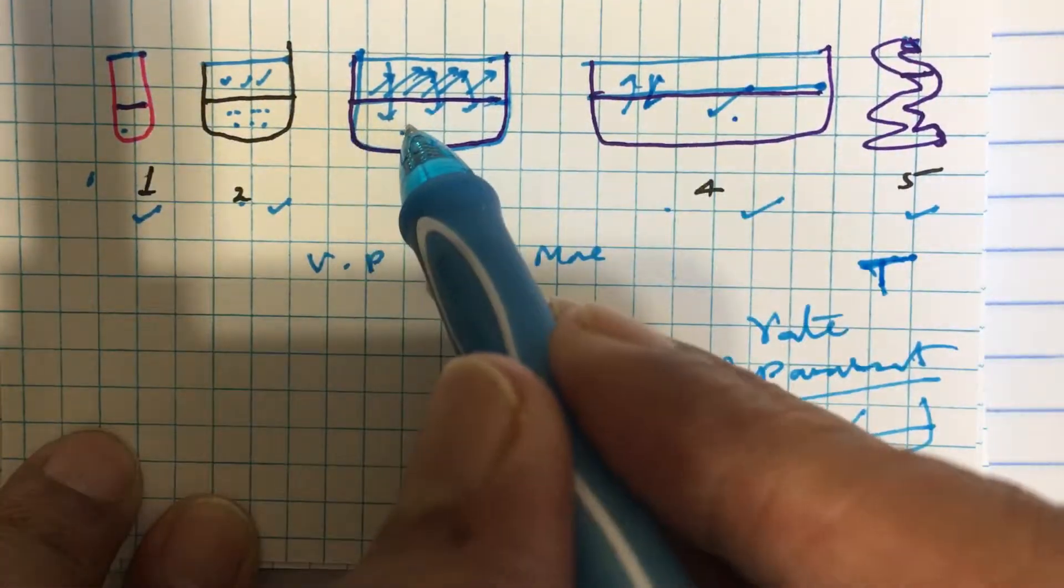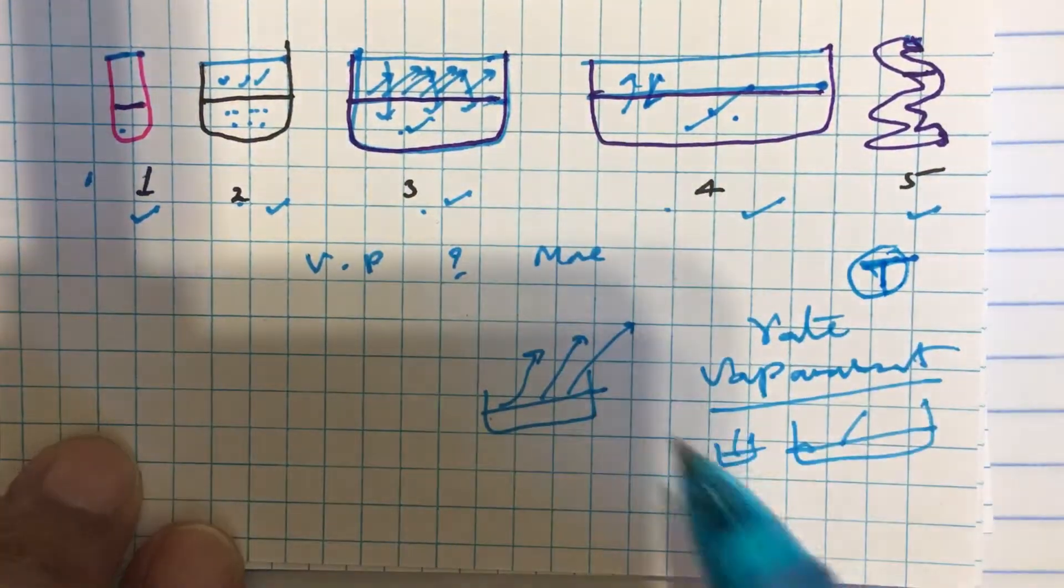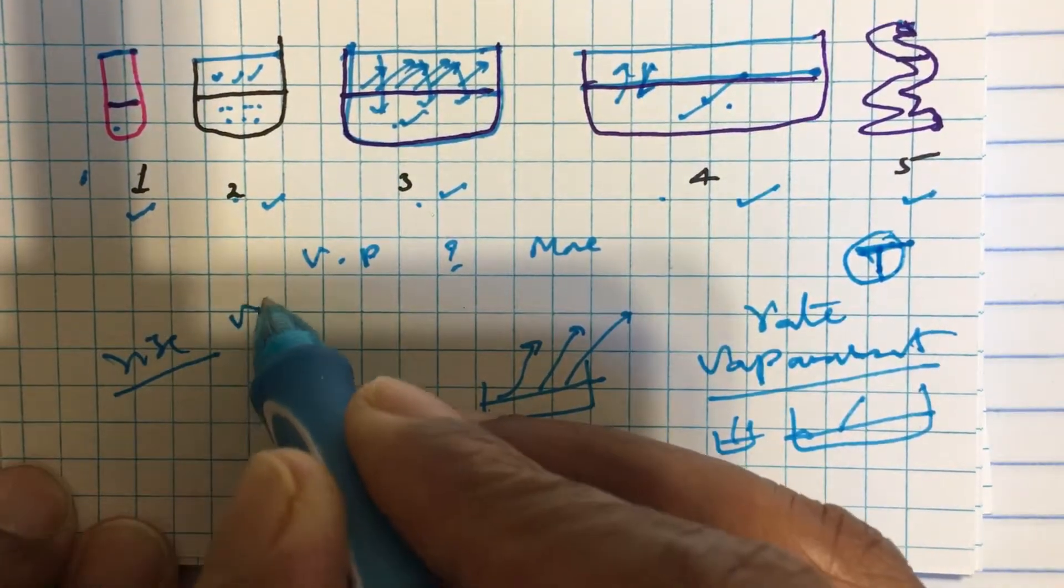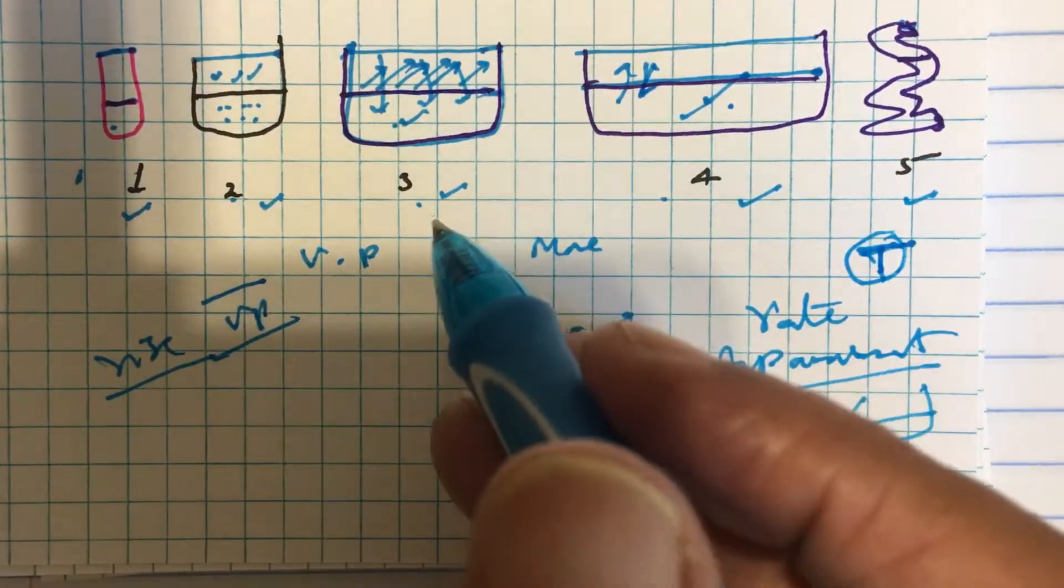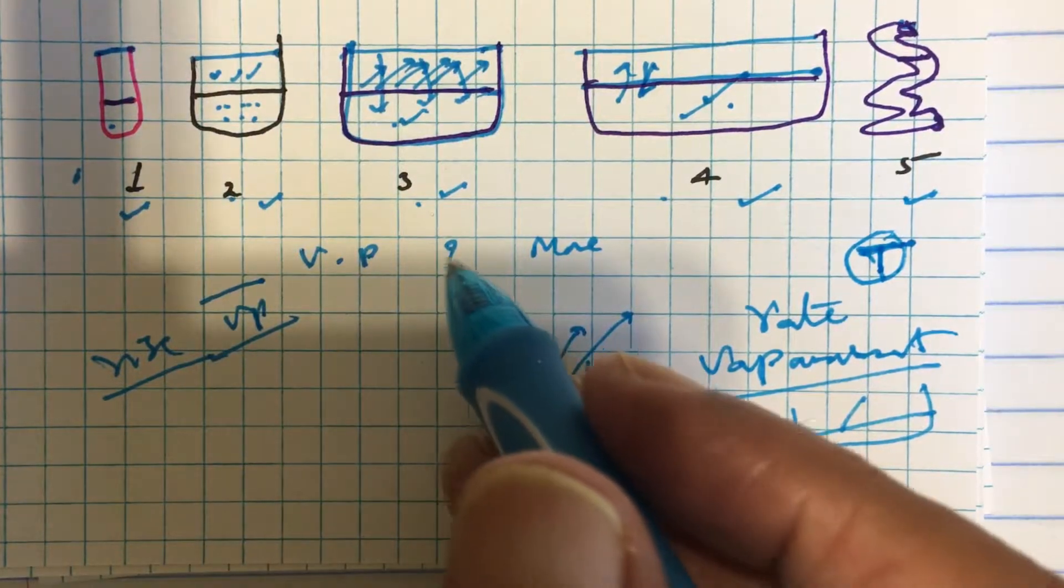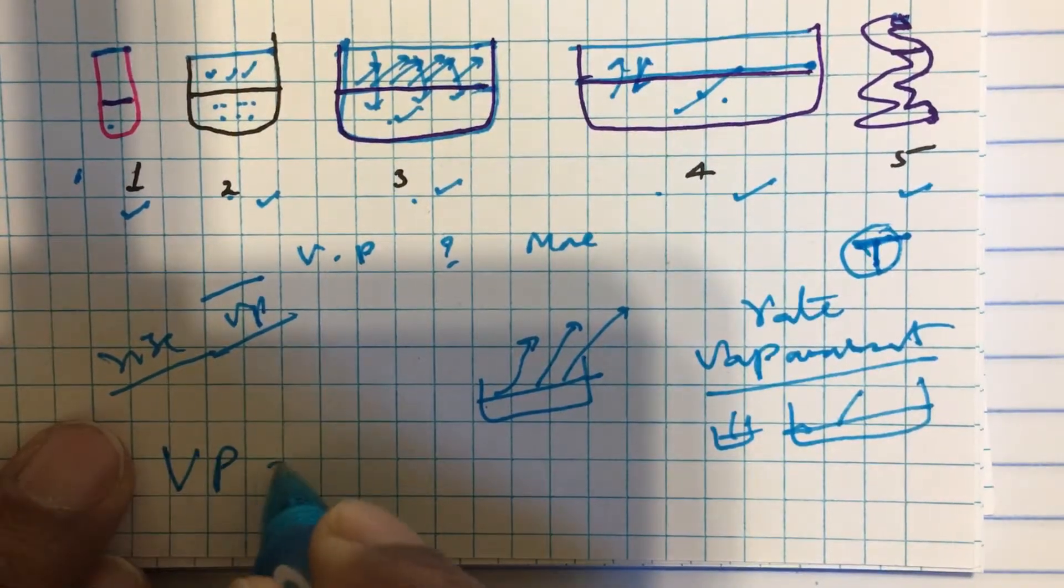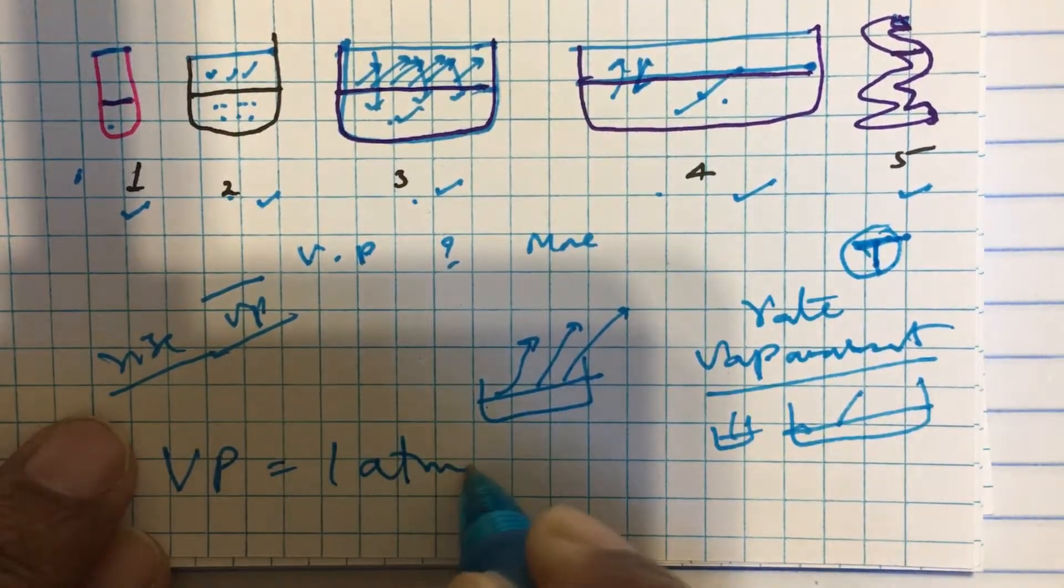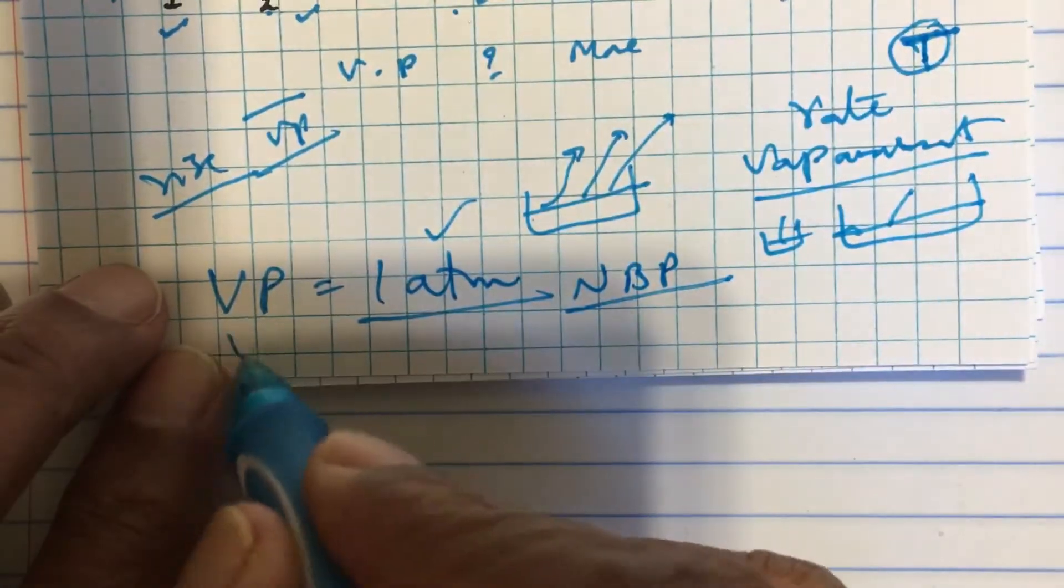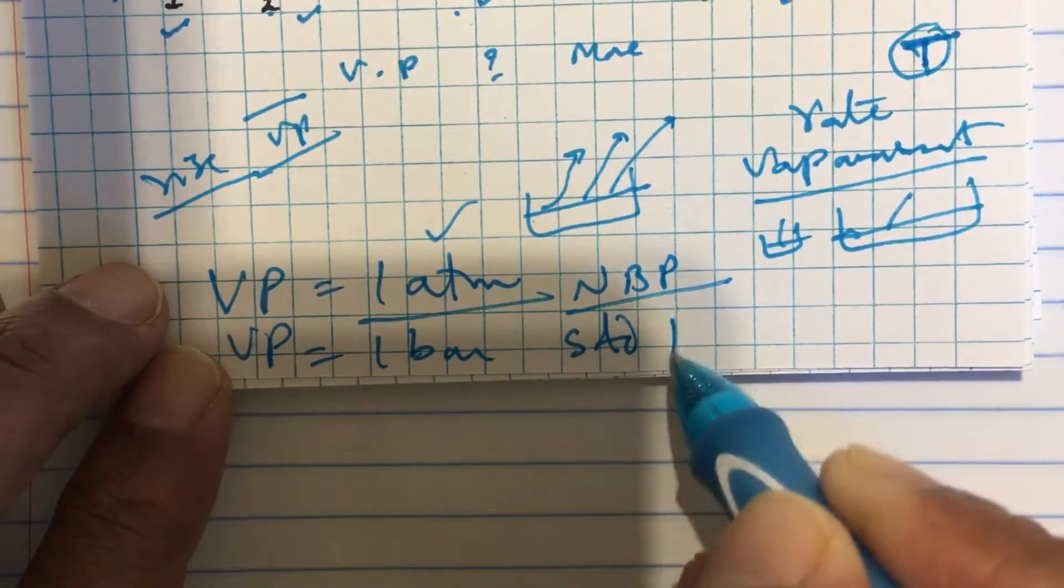Whatever may be the size and the shape of the container, for a given liquid at a given temperature, vapor pressure is same. Generally if we raise temperature, vapor pressure rises. Now a temperature where the vapor pressure of a liquid is equal to one atmosphere is called its normal boiling point. If the vapor pressure of a liquid is equal to one bar, it is called standard boiling point.